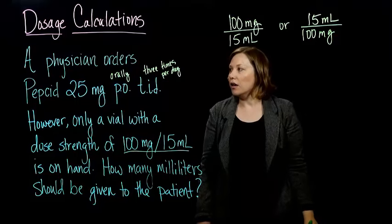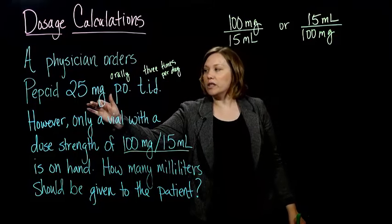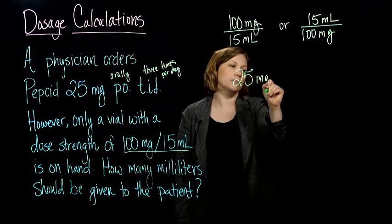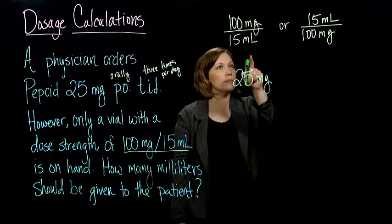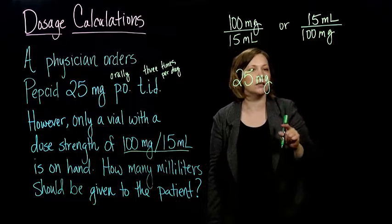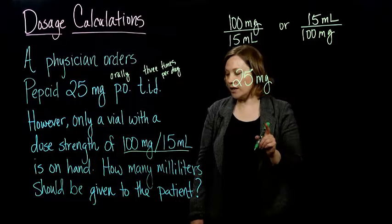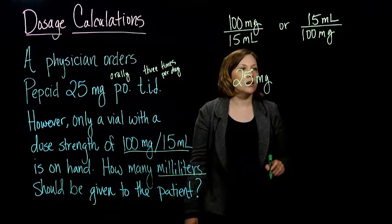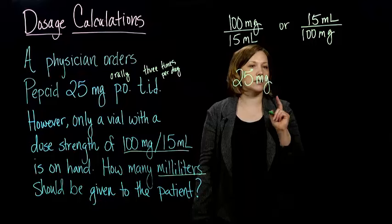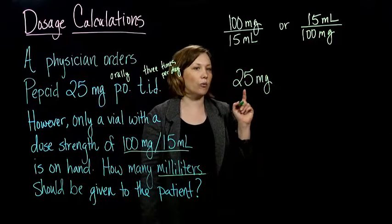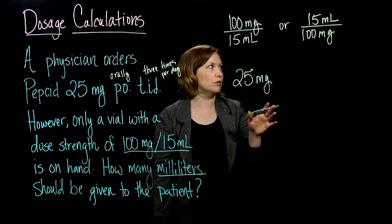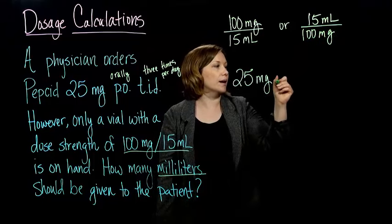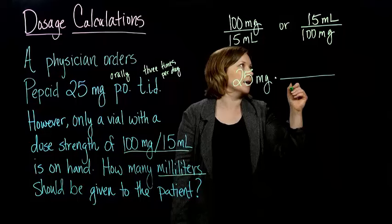So what's been ordered is the 25 milligrams, so I'm going to multiply by one of these two things. What am I trying to figure out? Well, I need to know how many milliliters to give. So I want my milligrams to cancel out, which means, which factor do I want to use? Right, I want to use the one with the milligrams on the bottom, so that the milligrams will cancel out.